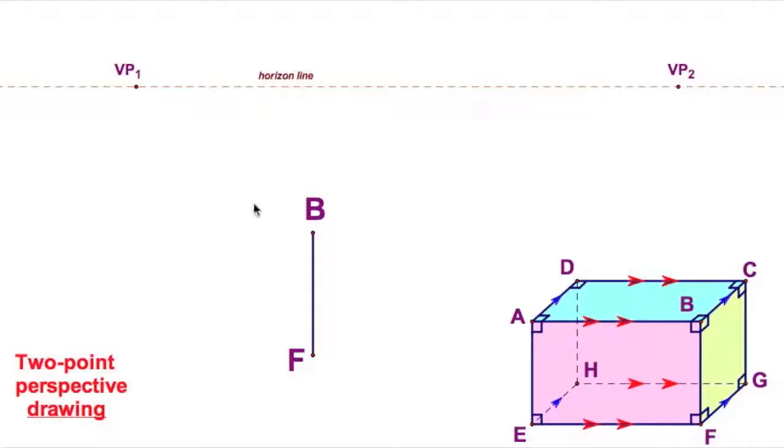You would use this kind of perspective if you were, say, drawing a house. Let's connect B and F to vanishing point 1. So there's B to vanishing point 1, and there's F to vanishing point 1.